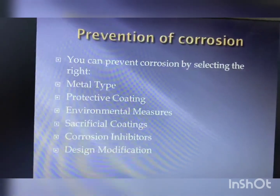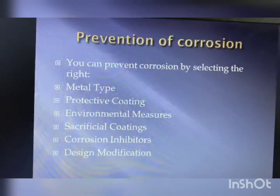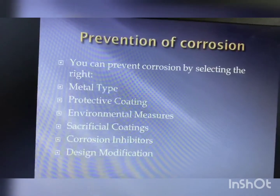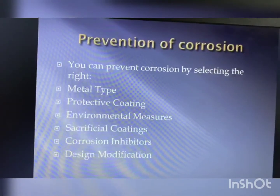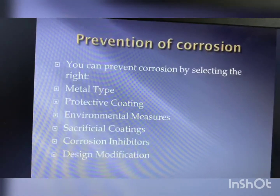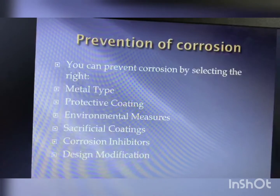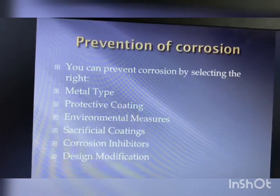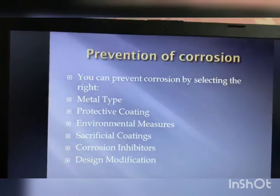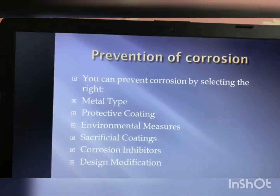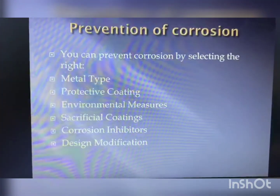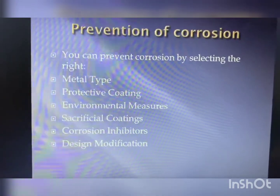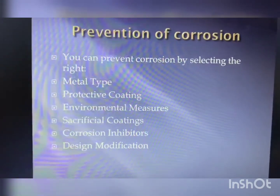We can prevent corrosion by: selecting the right metallic type, using protective coatings, applying environmental measures, sacrificial coating, using corrosion inhibitors, and design modification. These are the several methods for the prevention of corrosion.